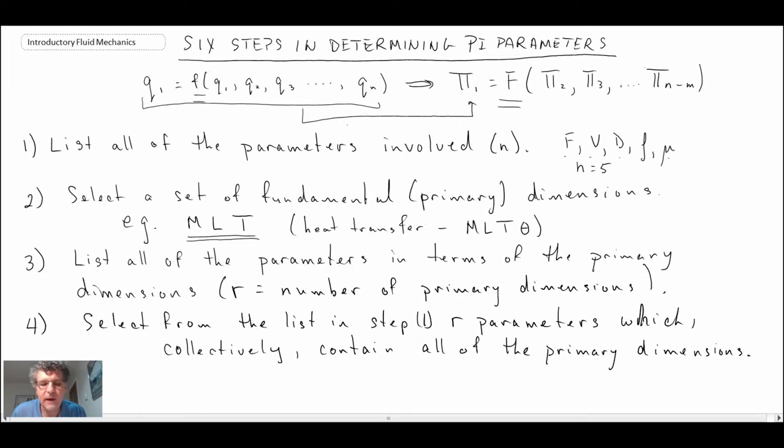Step four is to go back to step one. What you want to do is select r parameters which collectively contain all of the primary dimensions. That means if you have three primary dimensions, you want to take three of these - so maybe velocity, diameter, and density. Those will form a nucleus group that we're then going to work with and add the other parameters to those three. I picked V, D, Rho by cheating, but that's quite often what we use in fluid mechanics because they themselves represent all the primary dimensions and they are not scaling of one another.